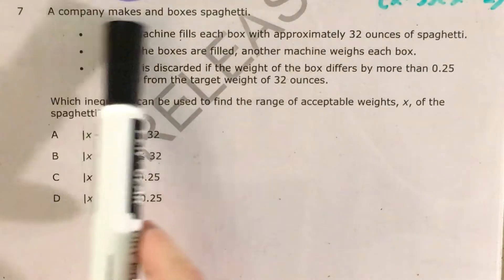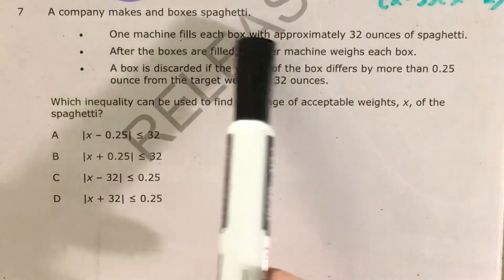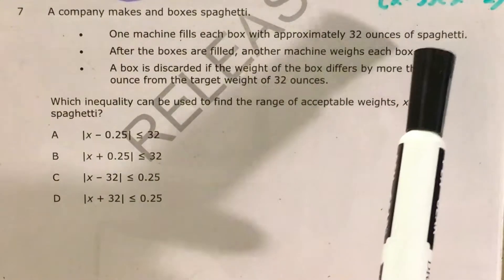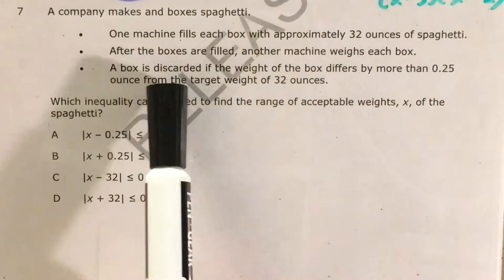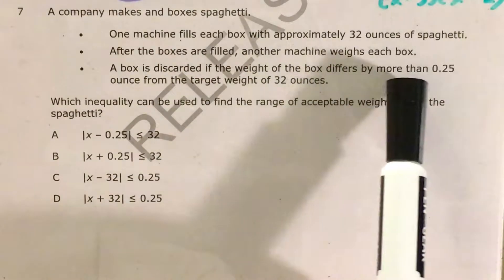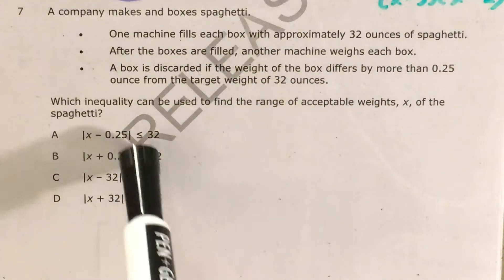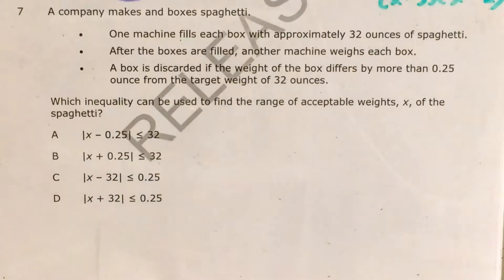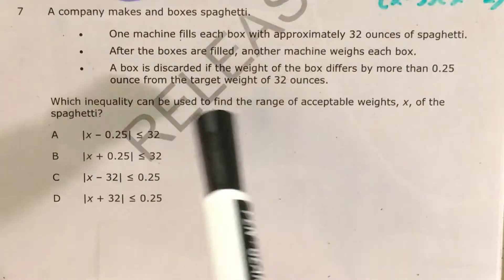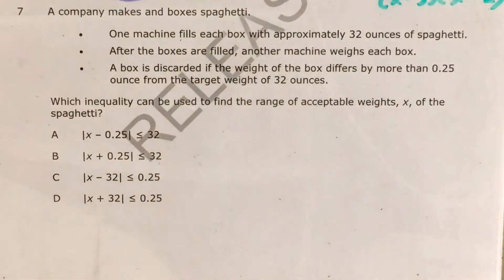The question tells us that a company makes and boxes spaghetti. Each box should have about 32 ounces of spaghetti, and the box will be discarded if the weight of the box differs by more than a quarter of an ounce from the target weight of 32 ounces. We see a bunch of answer choices with absolute value inequalities, and we're supposed to figure out which of them matches the range of acceptable weights of the boxes of spaghetti.